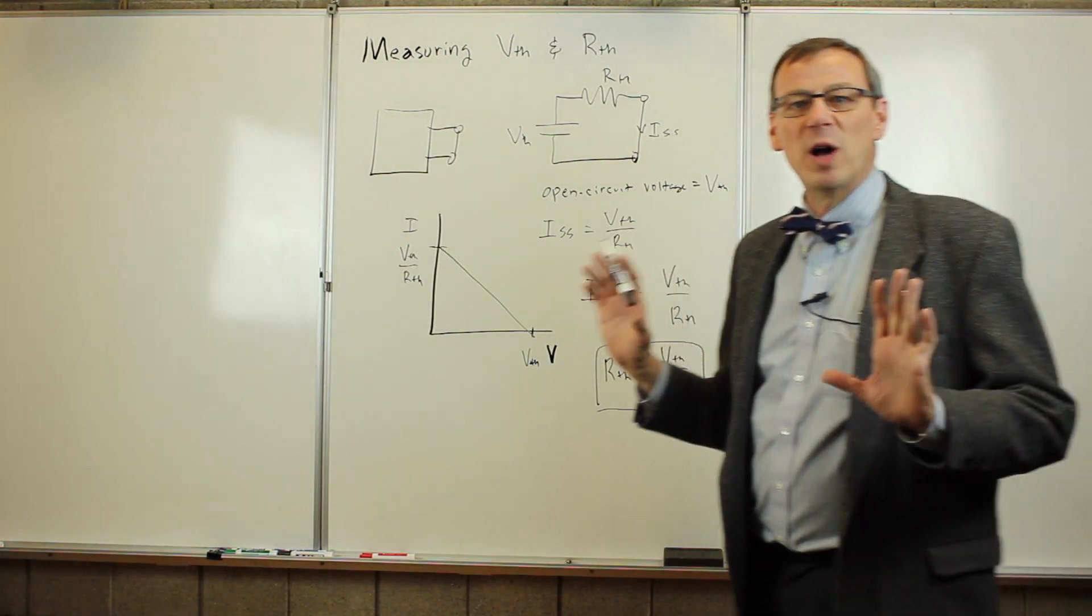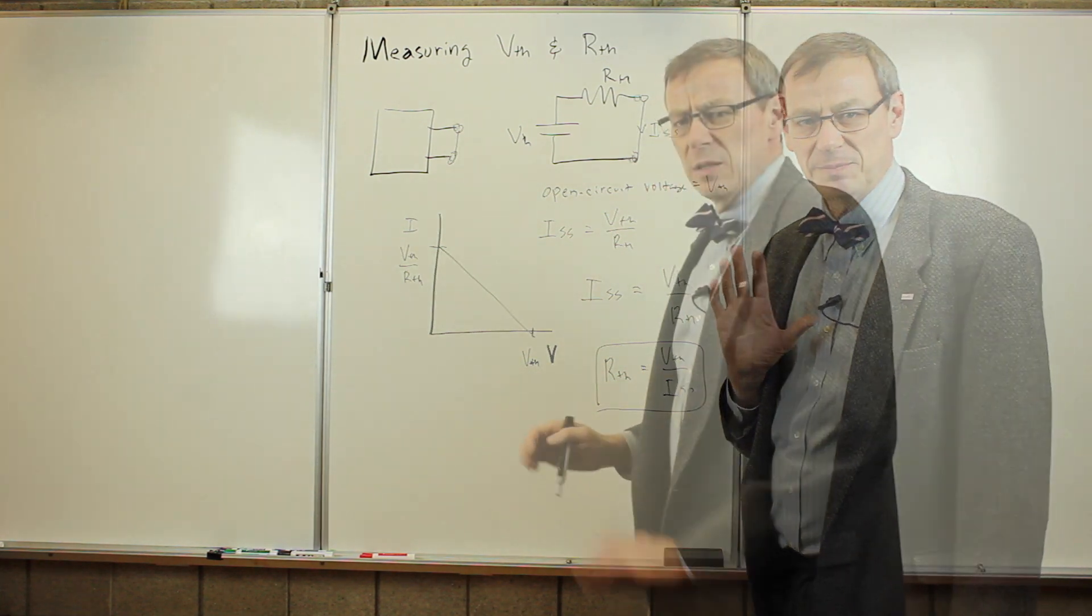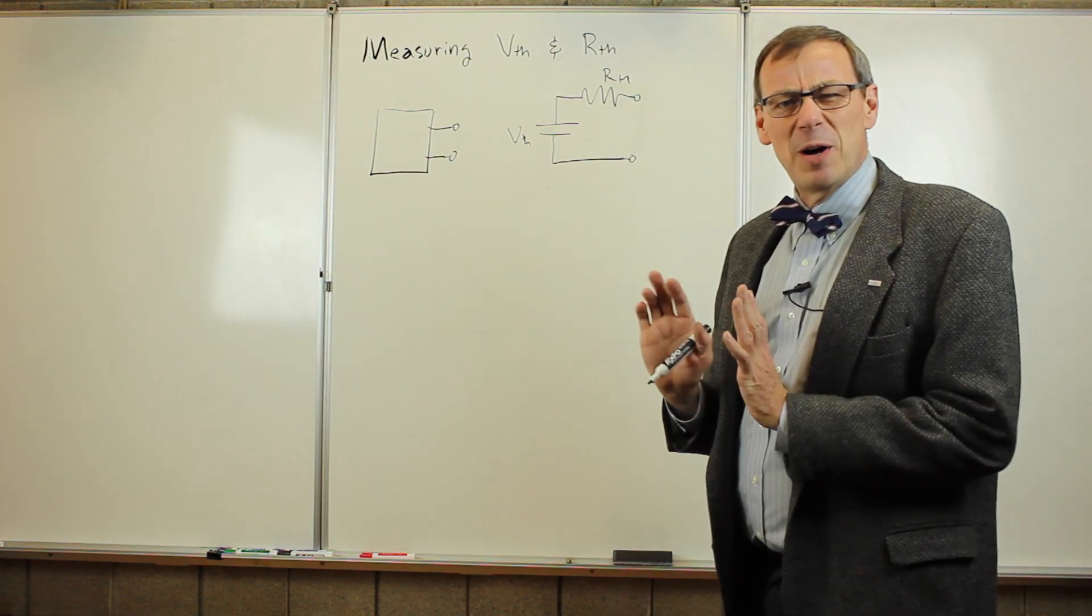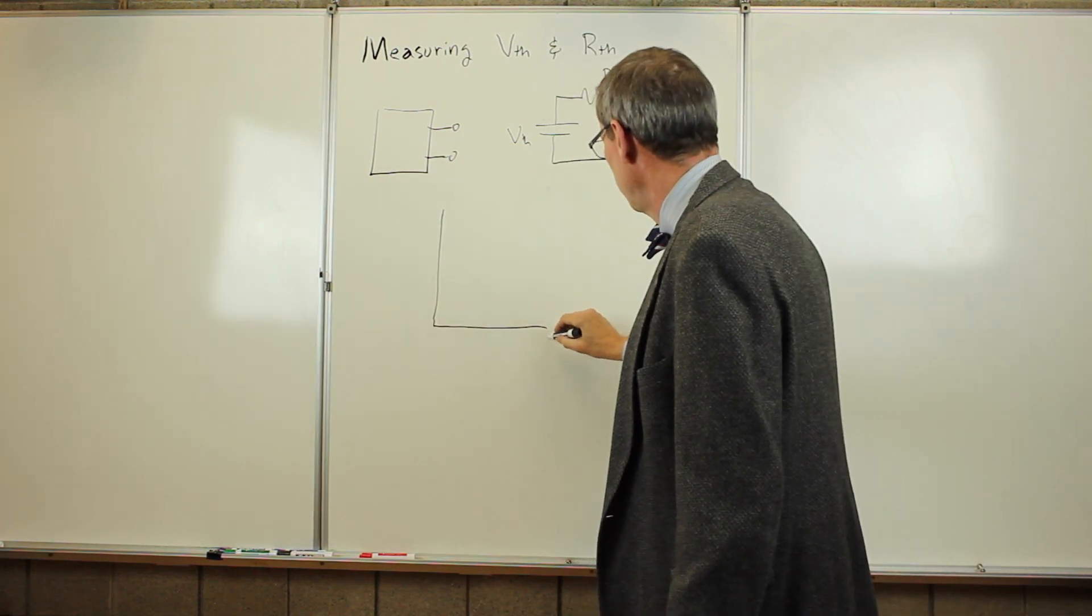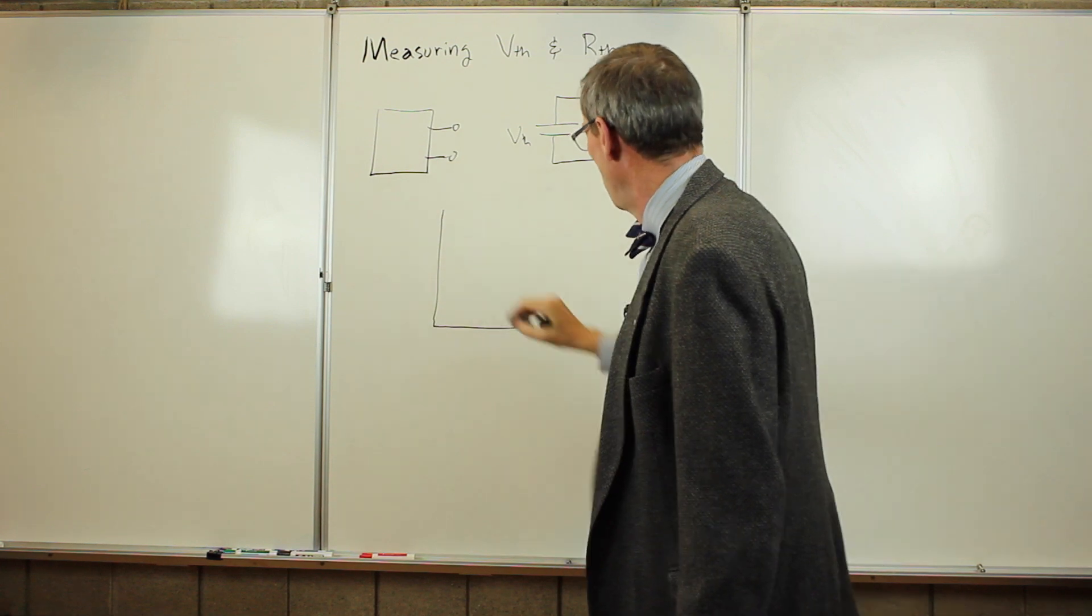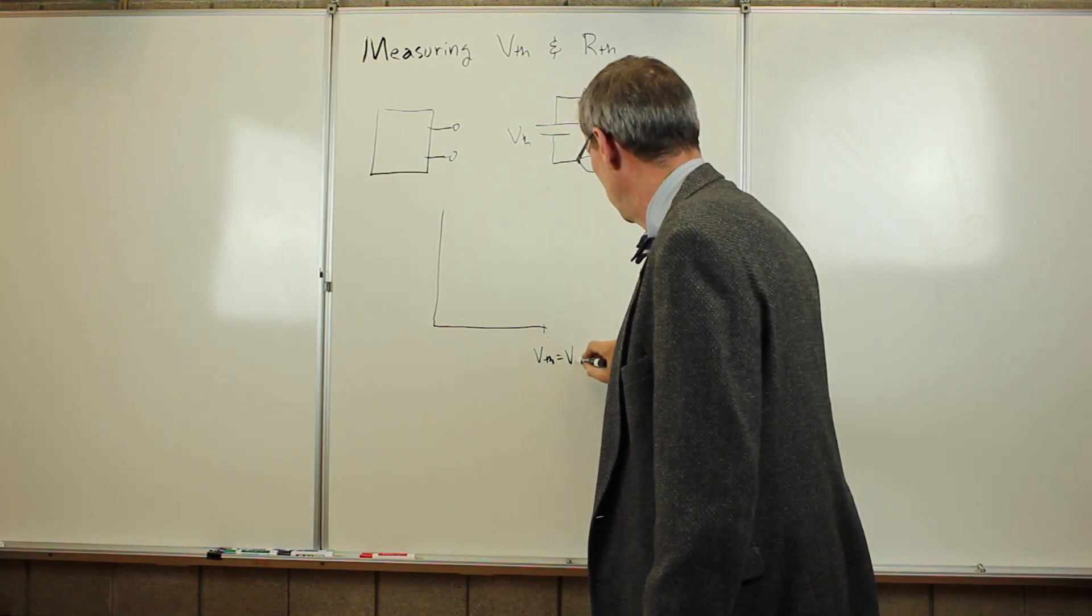That is one way we could do it. But as we mentioned, that's probably not the best way in the world to do that. So let's now talk about possibly a better way to do this. Again, we're interested in the IV curve. And we know if we measure the open circuit voltage, V Thevenin is V open circuit.